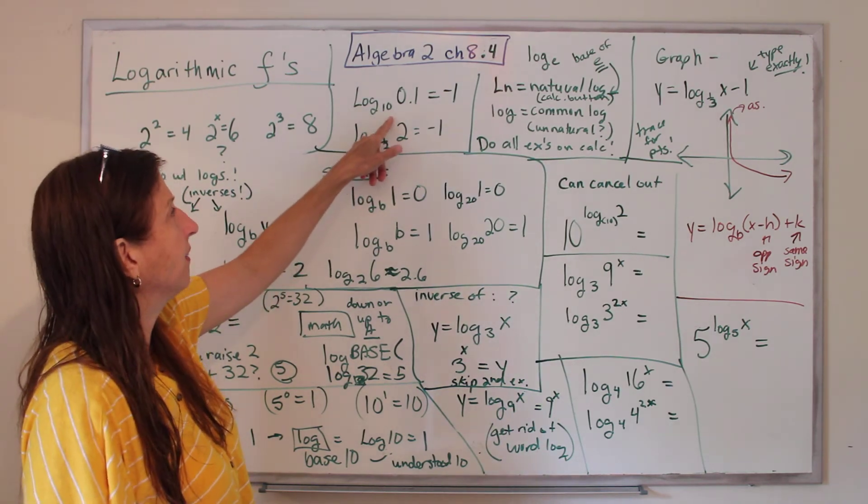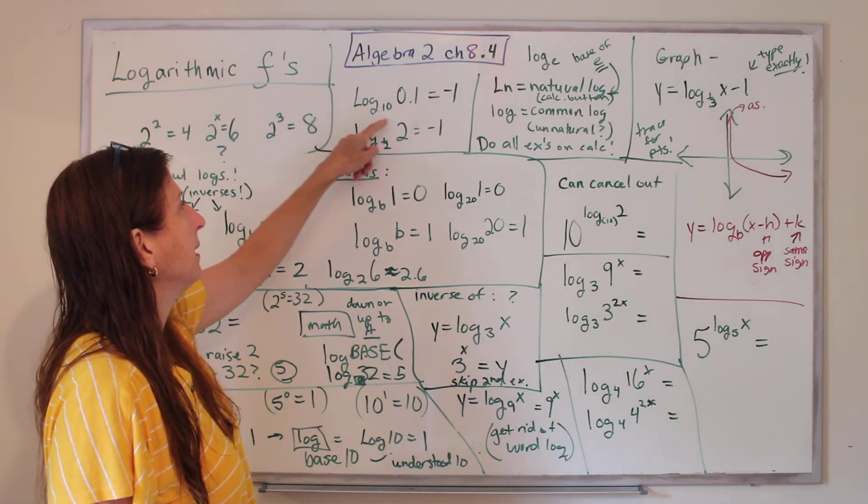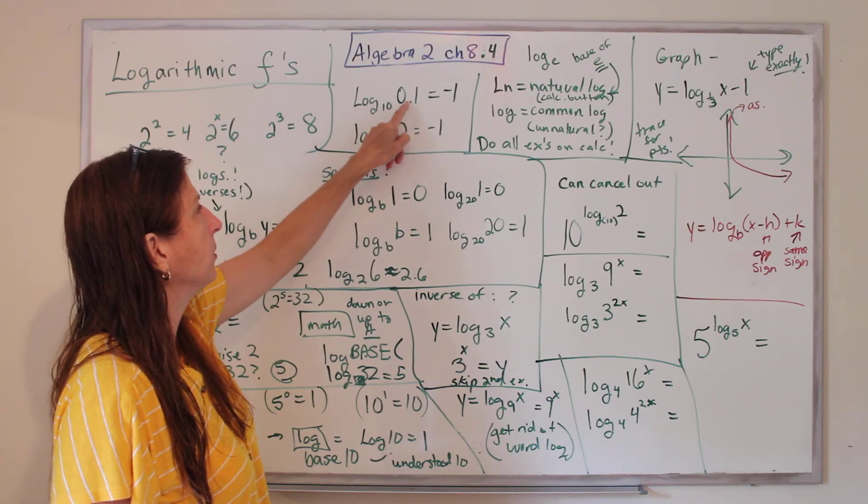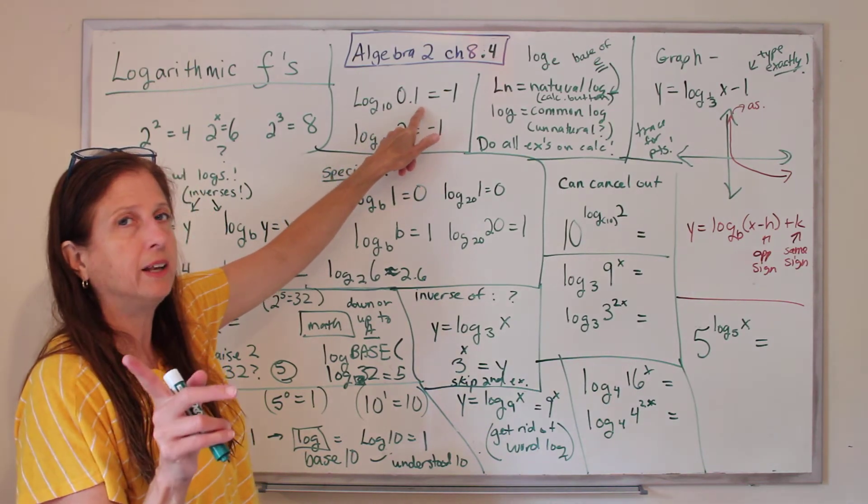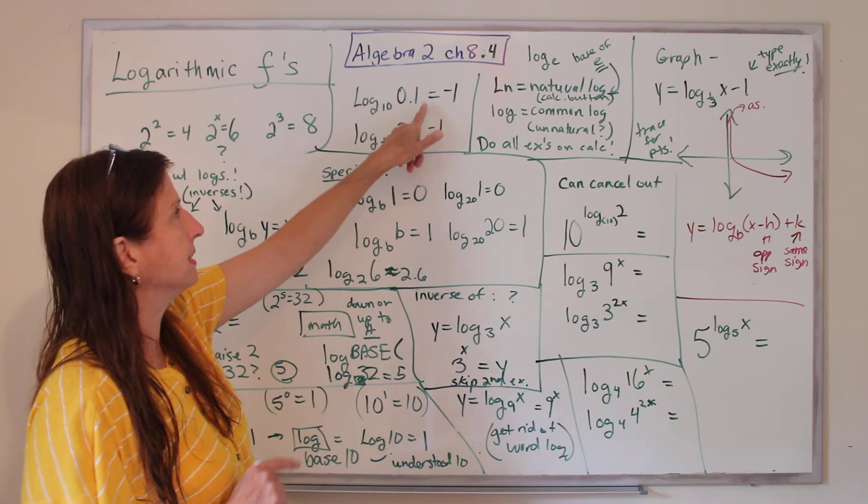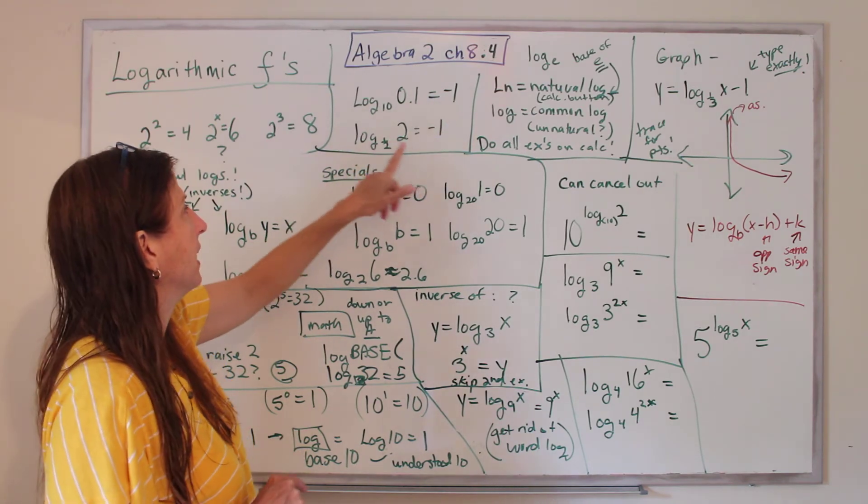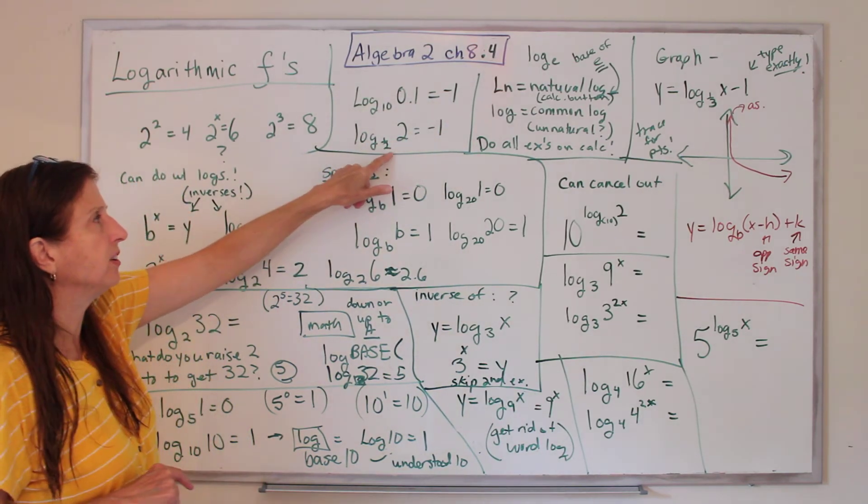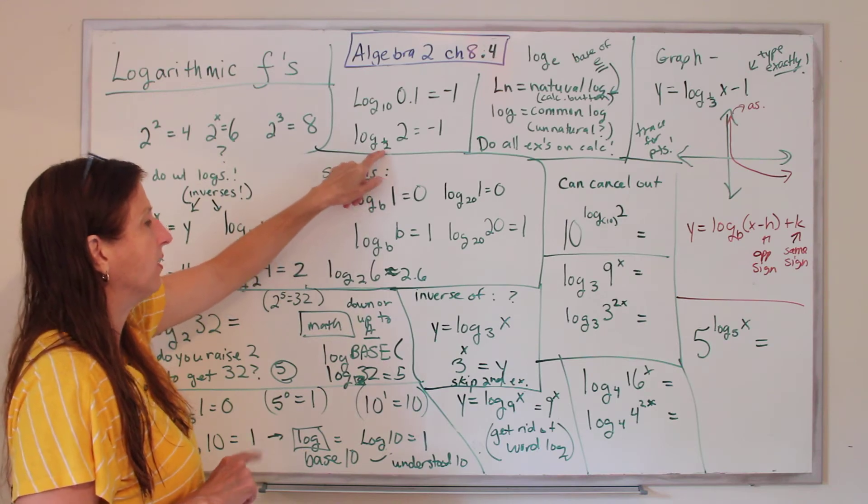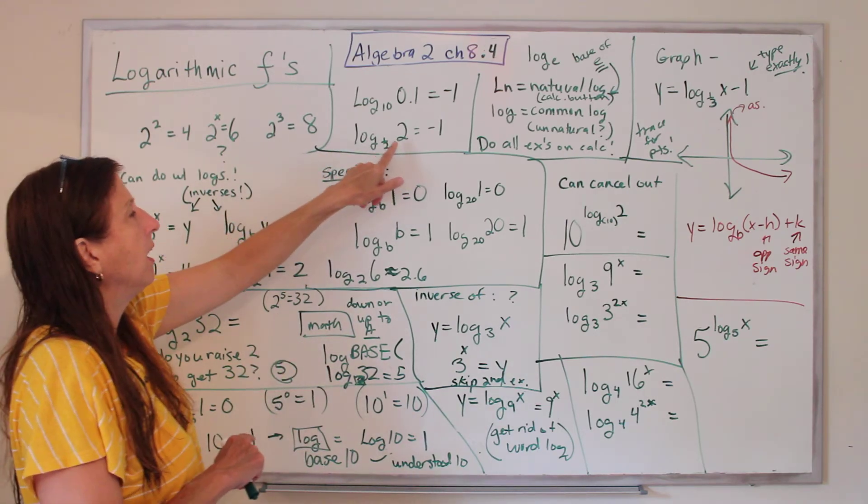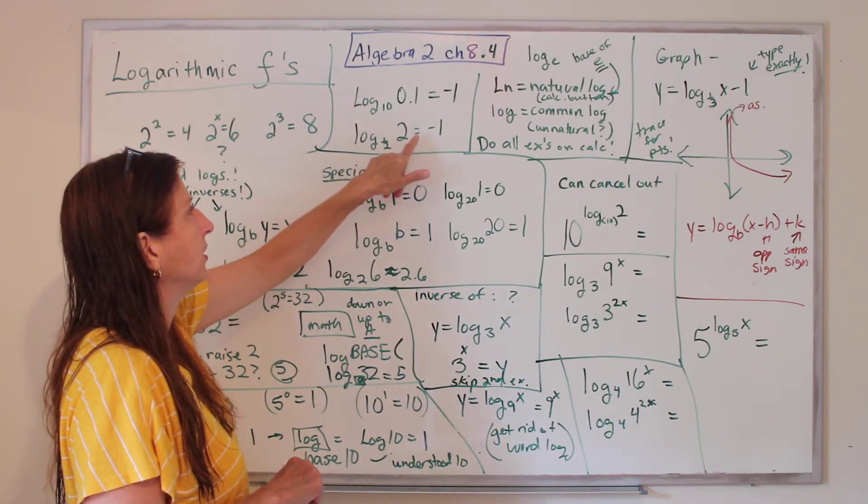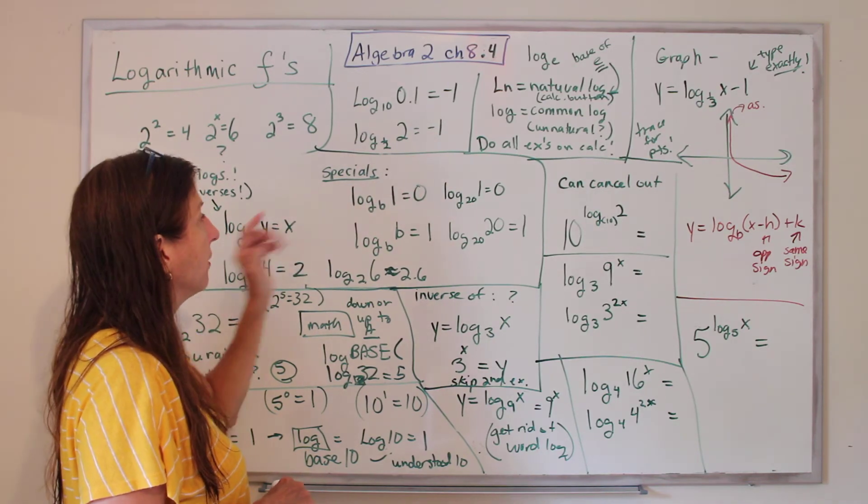Okay, so here's some more. I want you to try all of these on your calculator. Log base 10 of 0.1, you can do it with the log button, and I want you to do it with the base button. I want you to practice, and make sure you get negative 1. And notice that you can even do halves, log base 1 half. That'll have to be under the math button. Log base 1 half of 2 equals negative 1. Do all of those.